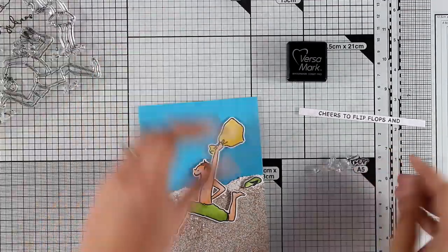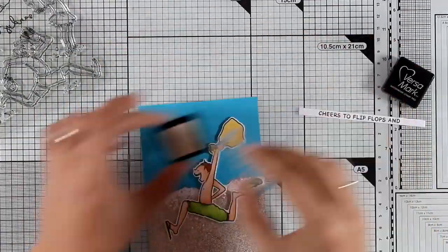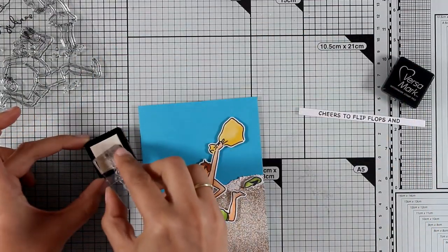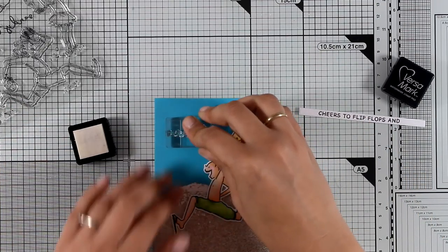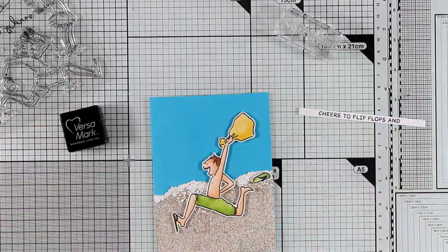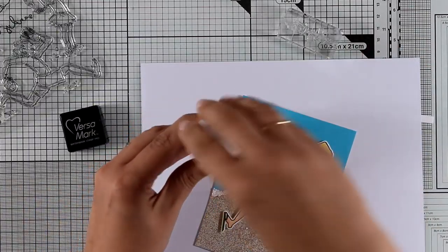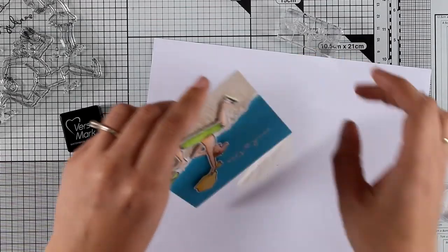Now it's time to stamp the sentiment. For that I'm going to go with Sandy Toes using Versamark ink. I'm going to apply white embossing powder - of course this time I'm not going to use the chunky one. Instead I'm going to use fine embossing powder just to catch all the detail on the sentiment.